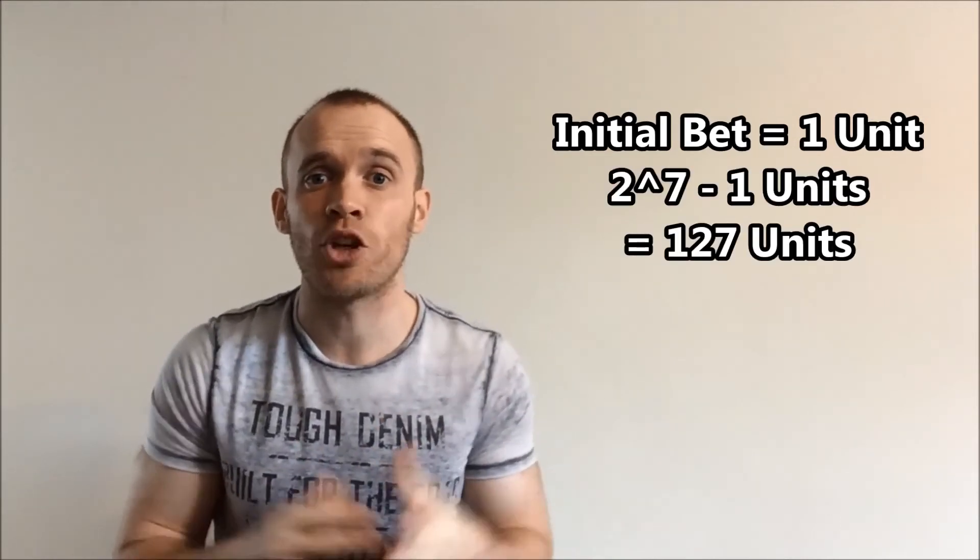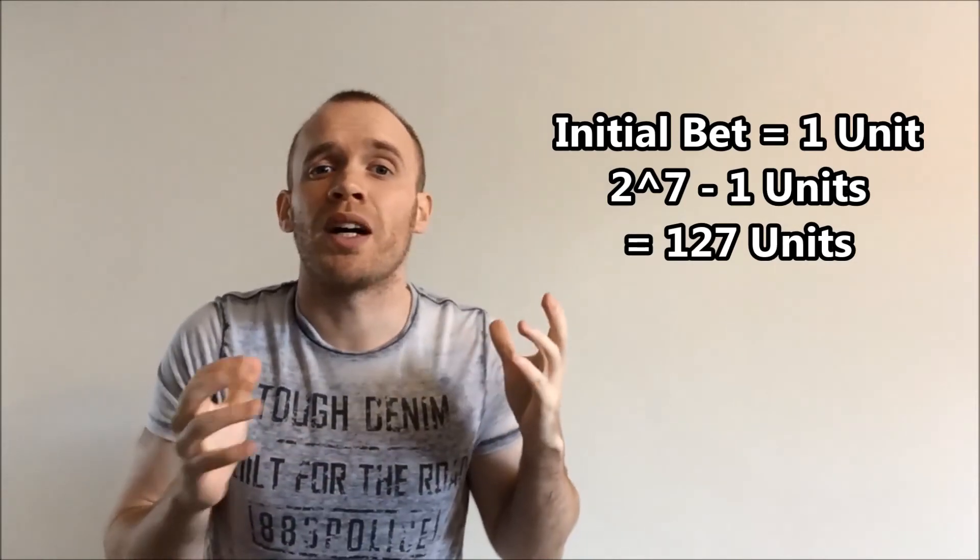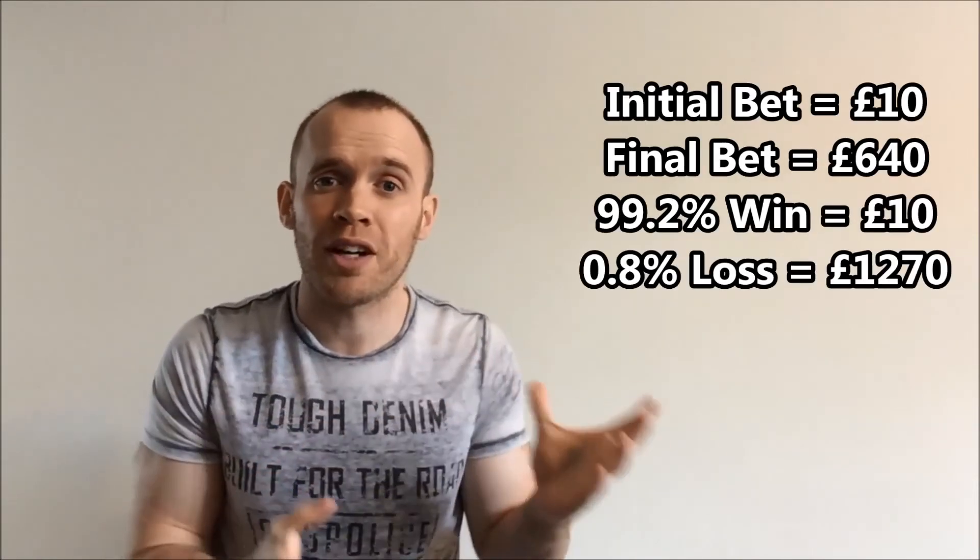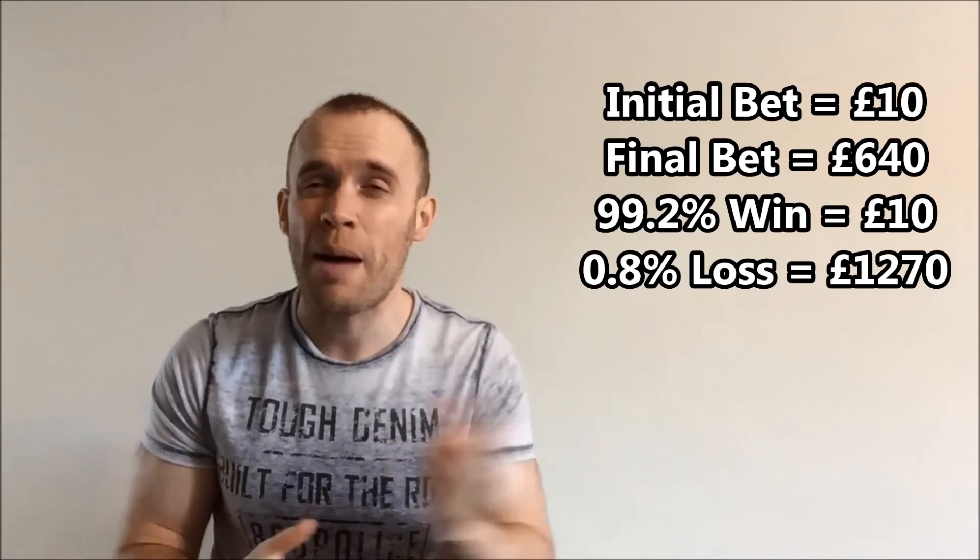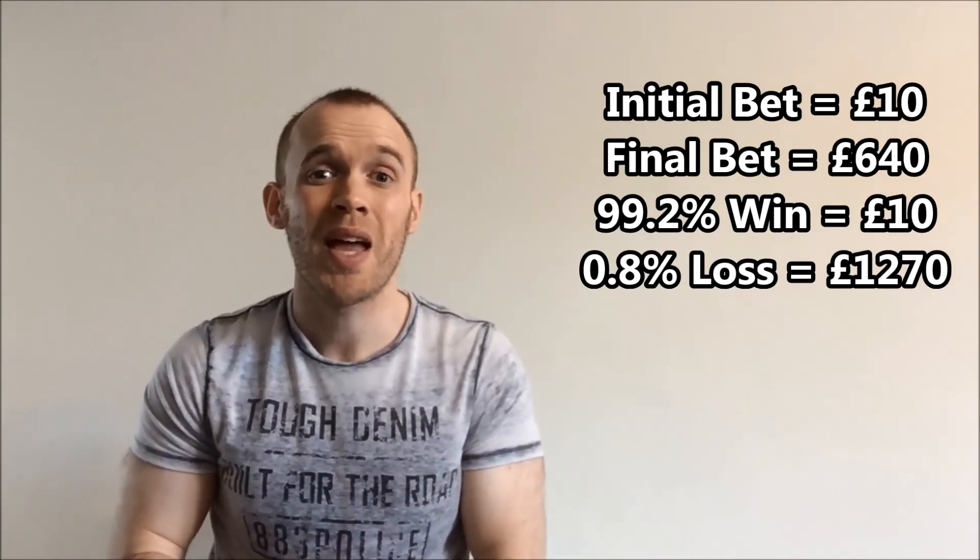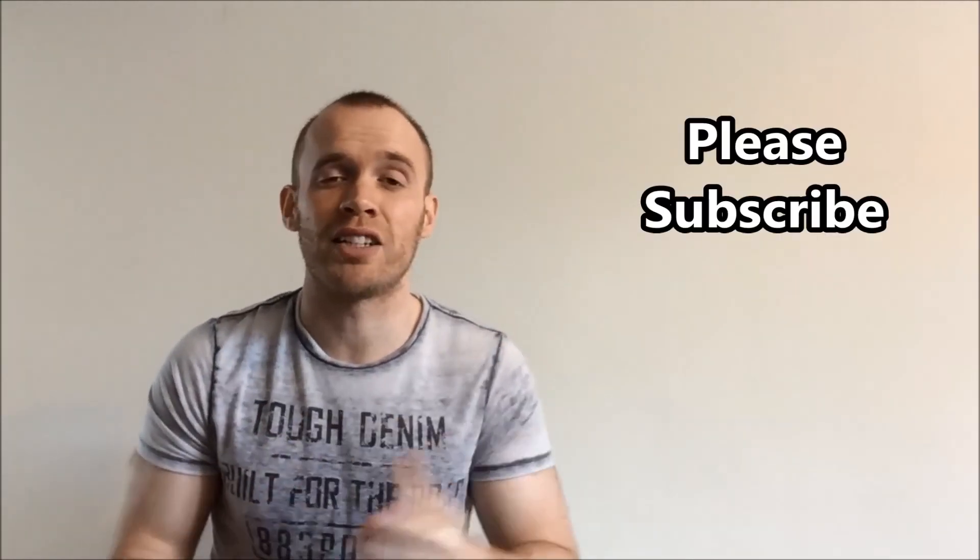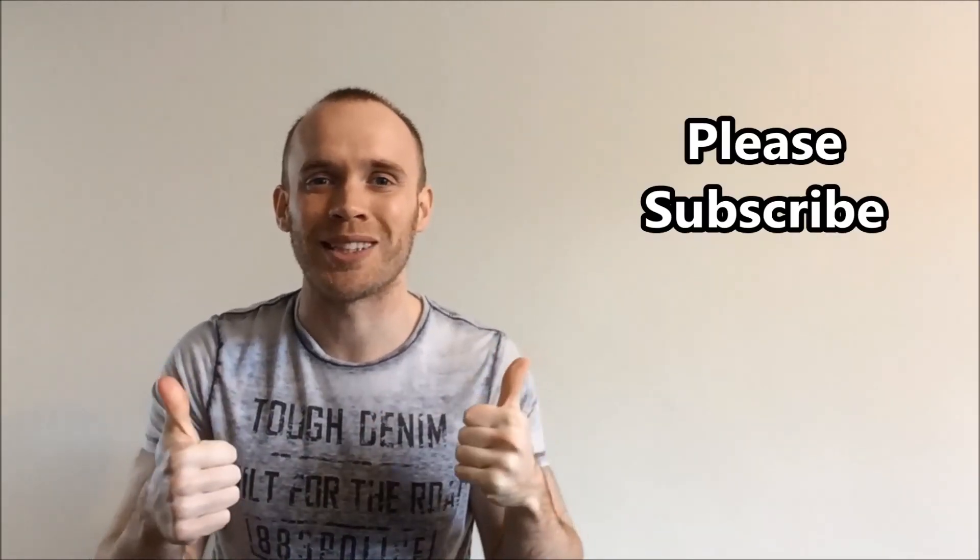So if your initial bet was going to be one unit, then you would need 2 to the power 7 minus 1 units in your bankroll in order to bet seven times. That means if you were going to bet ten pounds, you're only ever going to win ten pounds. If you happen to lose seven times, you're going to lose over a thousand pounds. Now that's everything for today. Join me in part two while I discuss how it relates to sports betting. Thanks for watching guys.